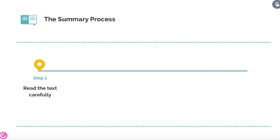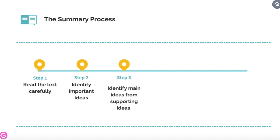First, read the text as many times as you need so that you know it in great detail. The second step is to identify the most important ideas. When you have identified the main ideas, you need to locate the supporting ideas.